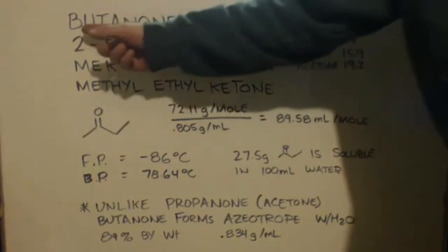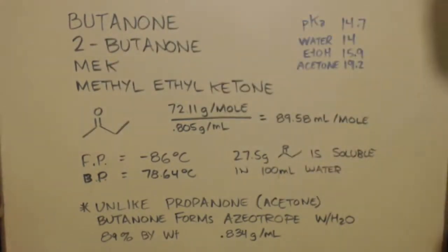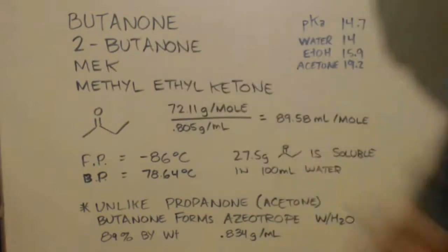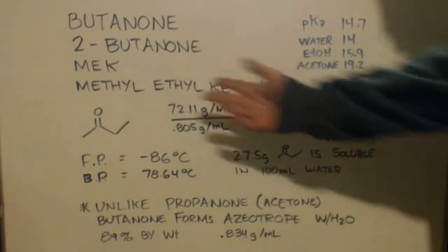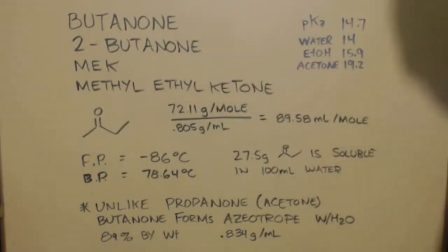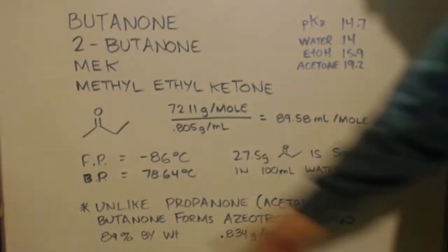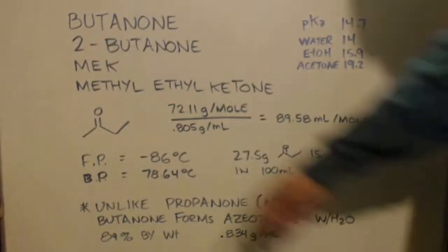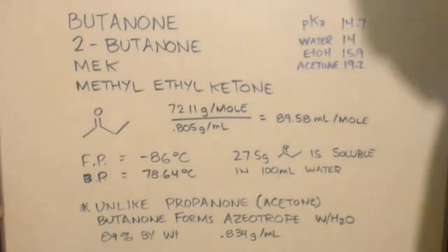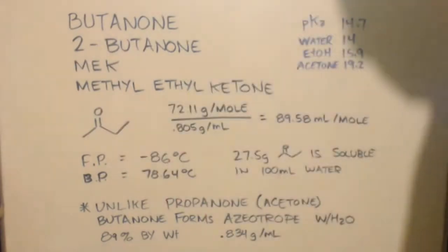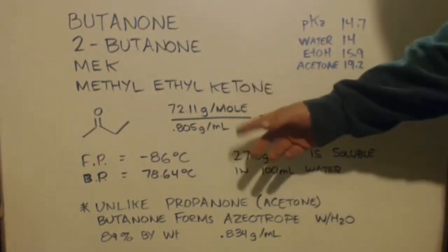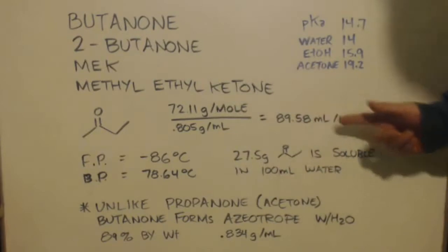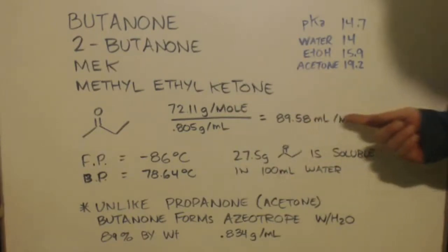I like to call it butanone. A lot of people call it 2-butanone. Like I said, MEK, methyl ethyl ketone. It is a ketone. Here's a picture of it — you got a methyl group on one side and an ethyl group on the other side, split up by a carbonyl. There's a molar mass and density listed. If you divide those, you'll get the molar volume.